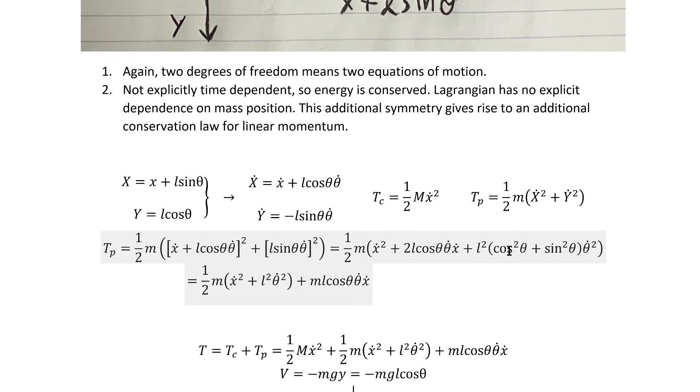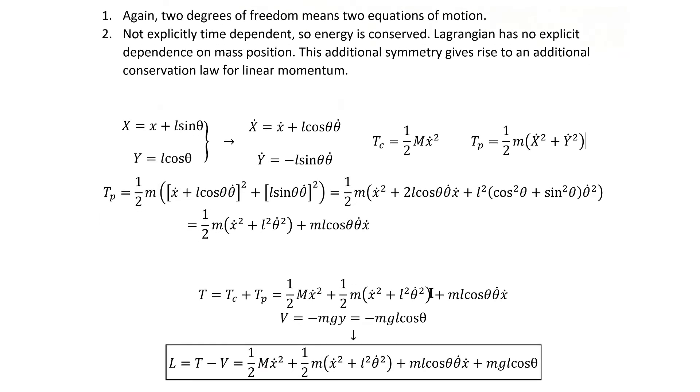Using a little bit of algebra, including our Pythagorean trig identity to simplify it down, we get to this result, which means our total kinetic energy is simply the sum of those two.